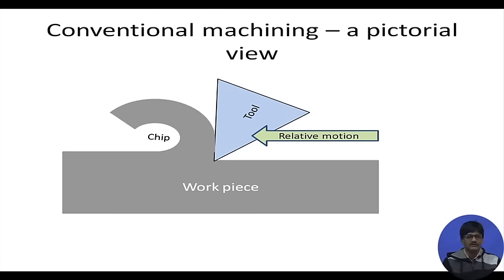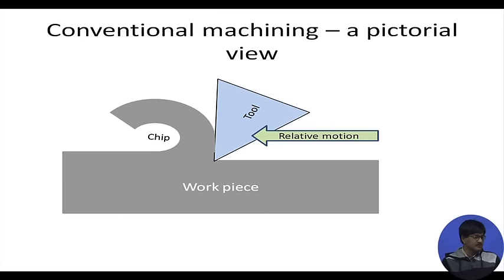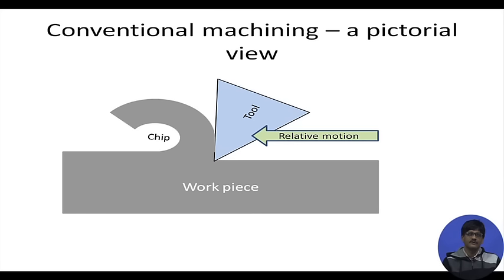Material generally fails by shear, so it is finally removed. This relative motion is sometimes referred to as cutting speed. The depth to which the tool is embedded may be the depth of cut or the uncut chip thickness. After material has been removed from one side to the other, the tool shifts sideways — this is called the feed motion.